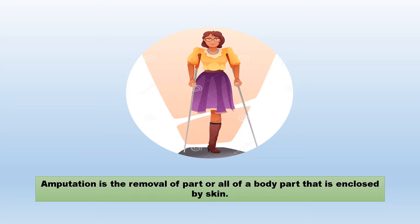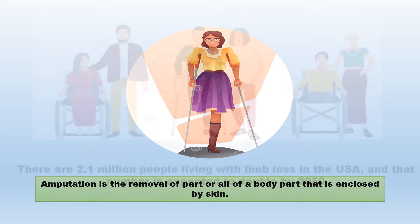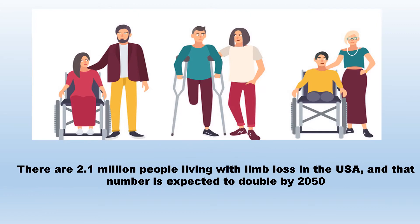Amputation is the removal of part or all of a body part that is enclosed by skin. There are 2.1 million people living with limb loss in the USA, and that number is expected to double by 2050.